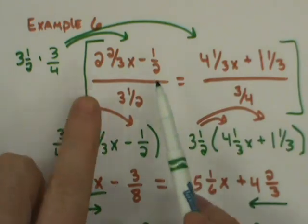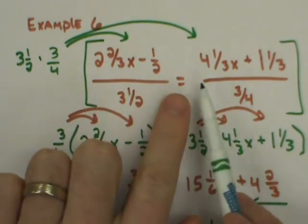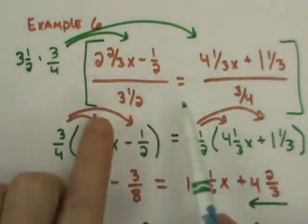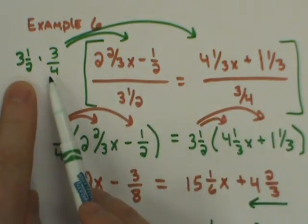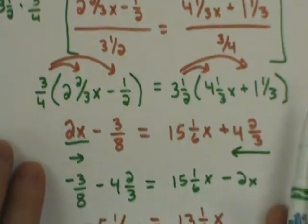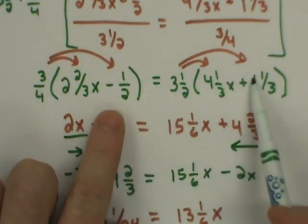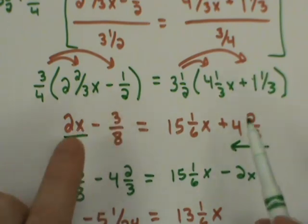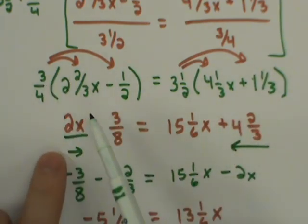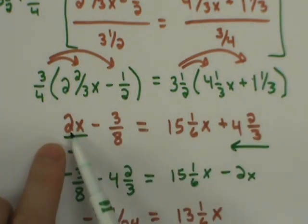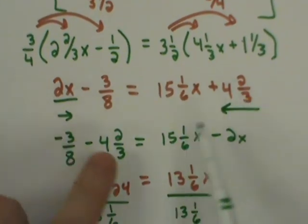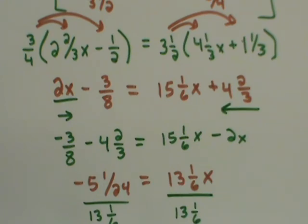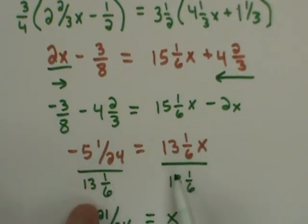We started with this, we had just a proportion. One big old fraction equaling one big old fraction. Even though it was ugly, we saw that it was a fraction equaling a fraction. So, we multiplied by the common denominator, we distributed that across, got an equation that had tons of fractions in it. We didn't lose our head, we went ahead and distributed, allowed the technology, allowed the calculator to do the work for us. We came up with a little bit simpler equation, moved our variables like we always would, simplified it down, and then divided by the coefficient, the number in front of the variable.